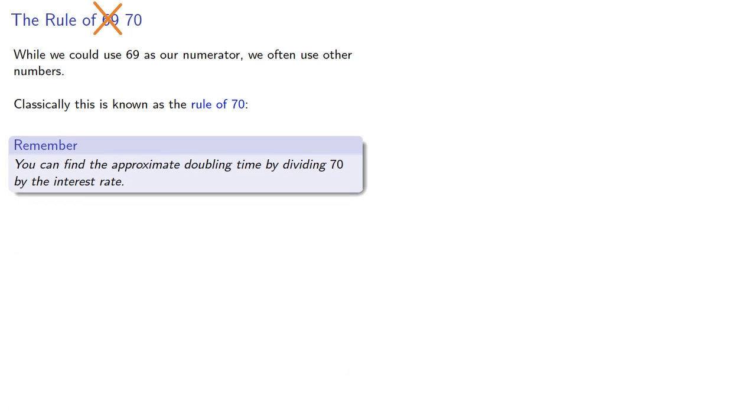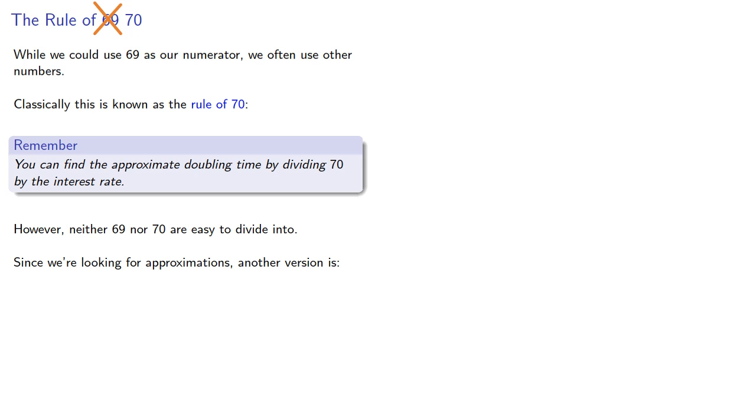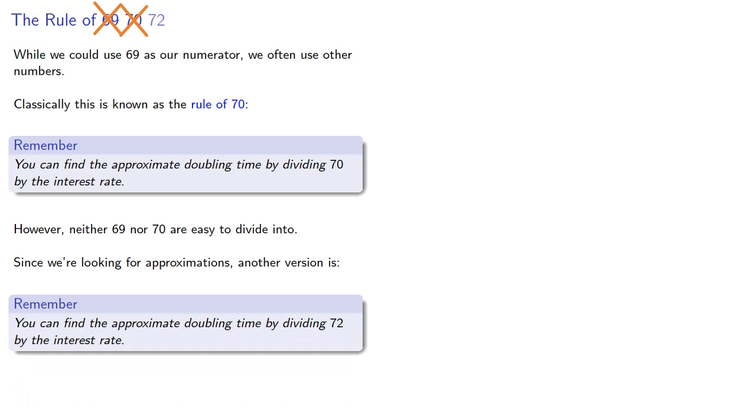Now while we could use 69 as our numerator, we often use other numbers. And not for the obvious reasons. Classically, this is known as the rule of 70. And so you can find the approximate doubling time by dividing 70 by the interest rate. But the problem is neither 69 nor 70 are easy to divide into. And since we're only looking for an approximation, another version is, you can find the approximate doubling time by dividing 72 by the interest rate.